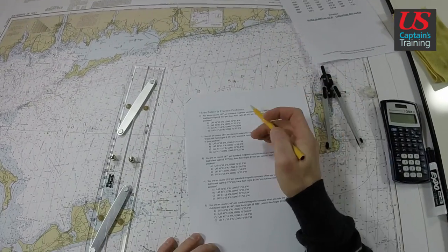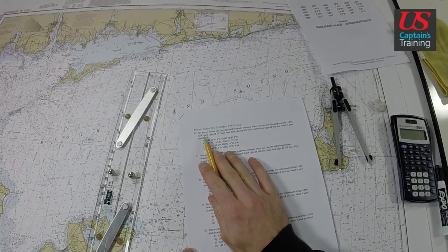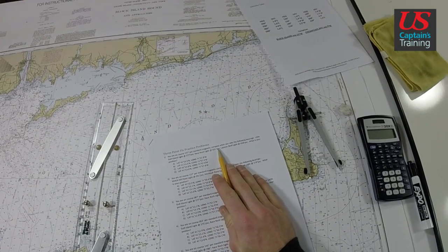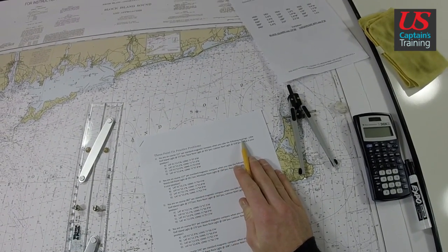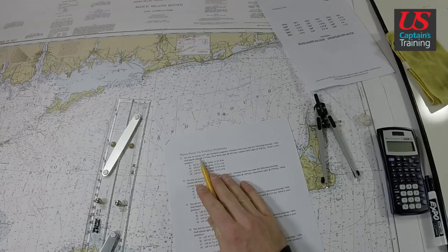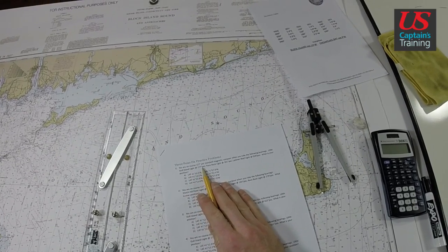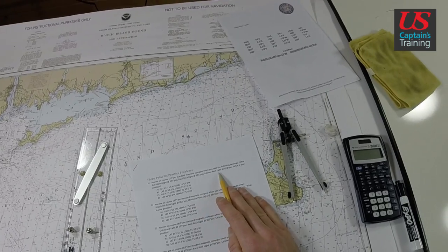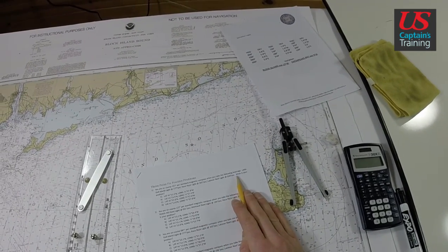Three point fix practice problem one. You are on course 157 degrees per standard magnetic compass when you take the following bearings: Little Gull Island 277 PSC, Race Rock Light 301 PSC, Latimer Reef Light 028 degrees PSC. What is your position?